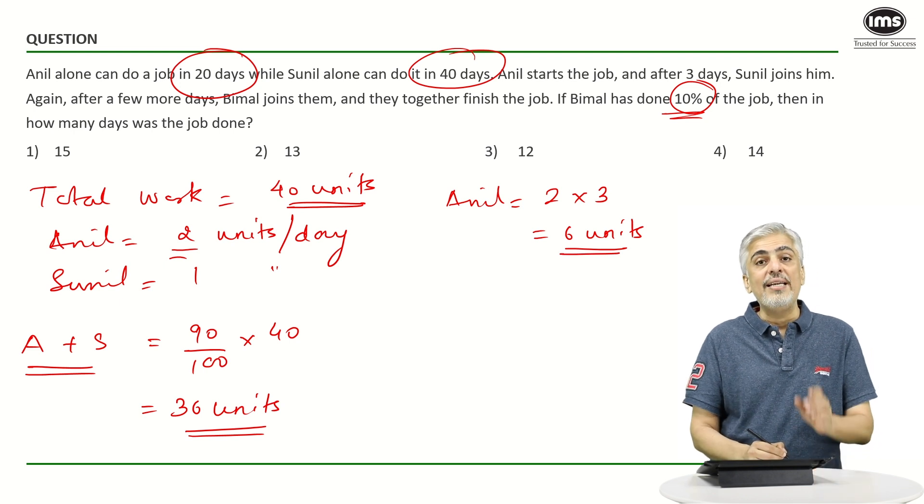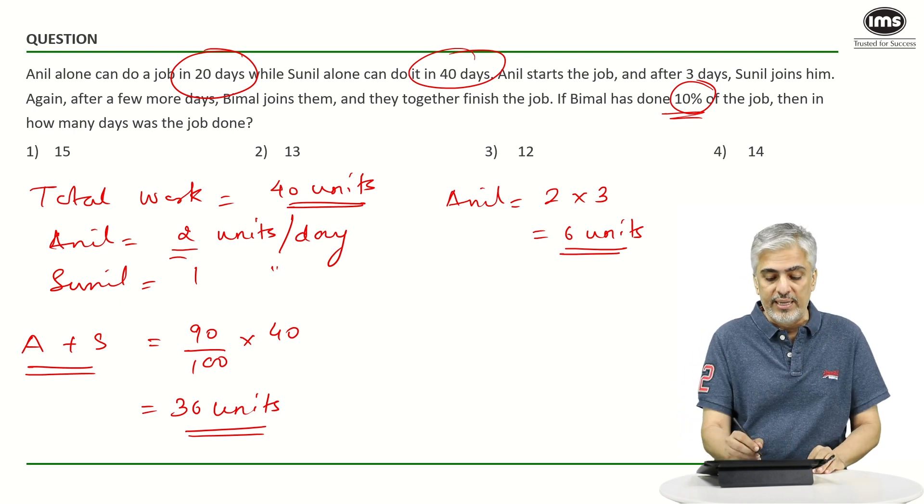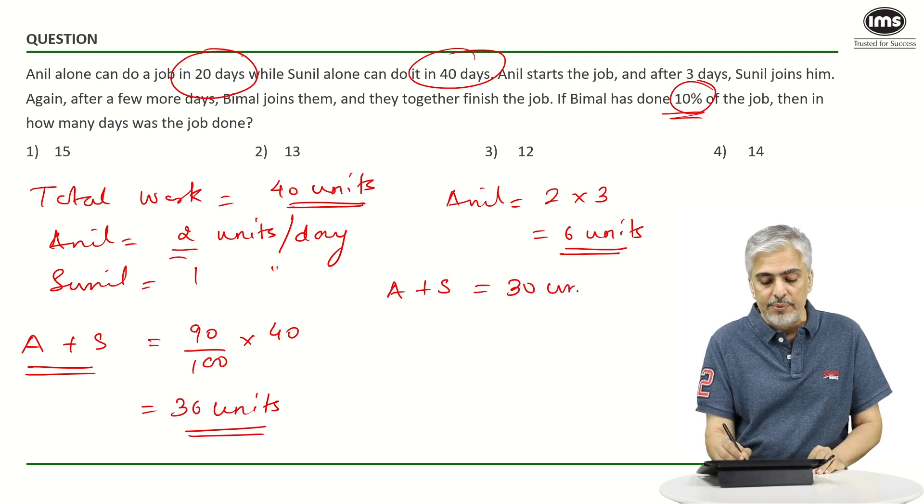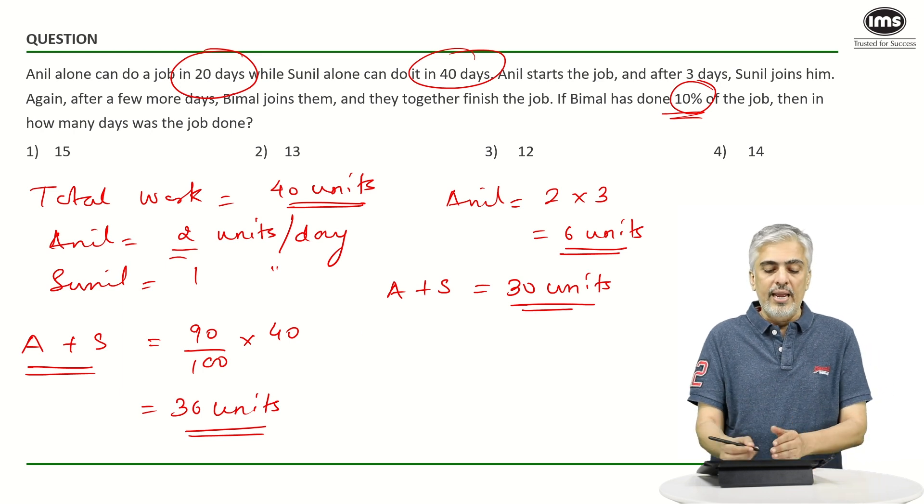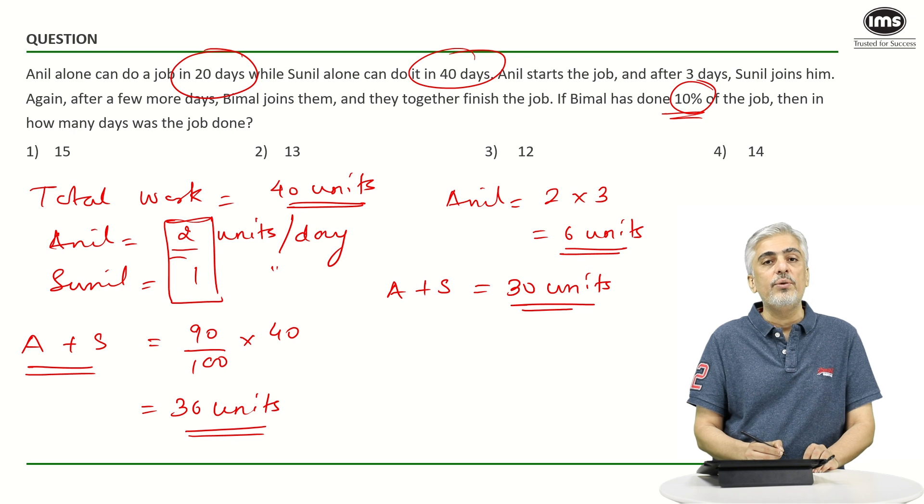So work pending for both of them to do together in the middle period where we don't know how many days were there. So Anil and Sunil have to do 30 units together in that middle period. 36 minus 6. And that 30 they will be doing at an efficiency of 2 plus 1, 3 units per day.